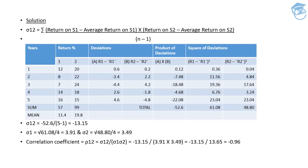The covariance formula is: Sigma of (return on security one minus average return on security one), multiplied by (return on security two minus average return on security two), whole divided by n minus one. This is the formula for covariance.